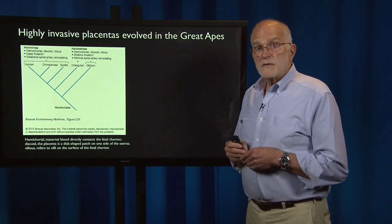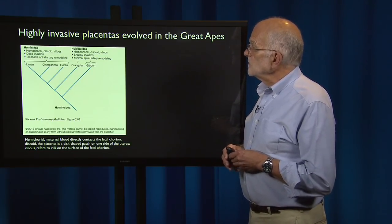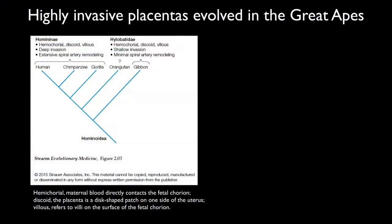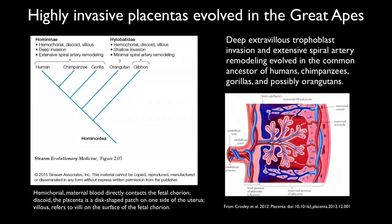The next ancient event, about 15 million years ago, occurred when highly invasive placentas evolved in the great apes. A phylogenetic tree of the hominidae shows we are most closely related to chimpanzees and gorillas, then orangutans and gibbons. Gibbons have shallow invasion of the endometrium and minimal remodeling of the spiral arteries, whereas in the other great apes there is extensive spiral artery remodeling and deep extravillous trophoblast invasion, giving the fetus much greater control over the maternal blood supply.